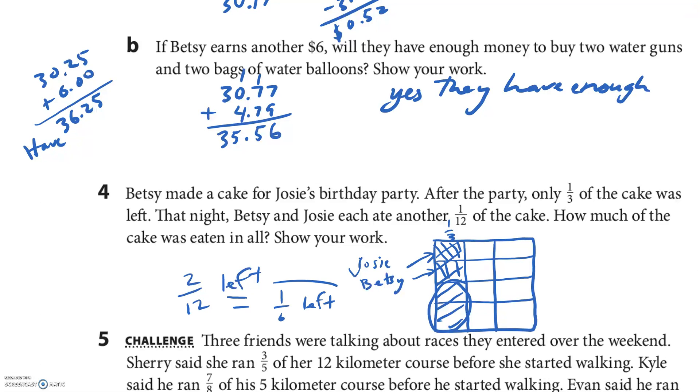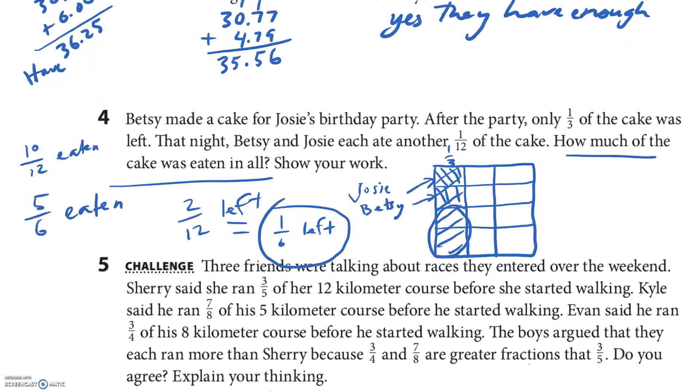How much of the cake was eaten? Oops, see, and I read it wrong. I had to read—see, I read it again. How much of the cake was eaten in all? If there's 1/6 left, then 5/12, or 5/6, was eaten. Or 10/12 eaten.